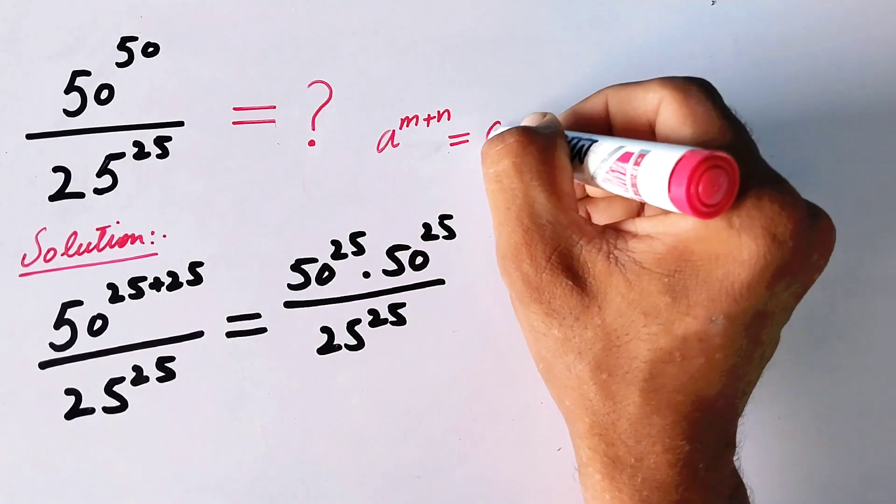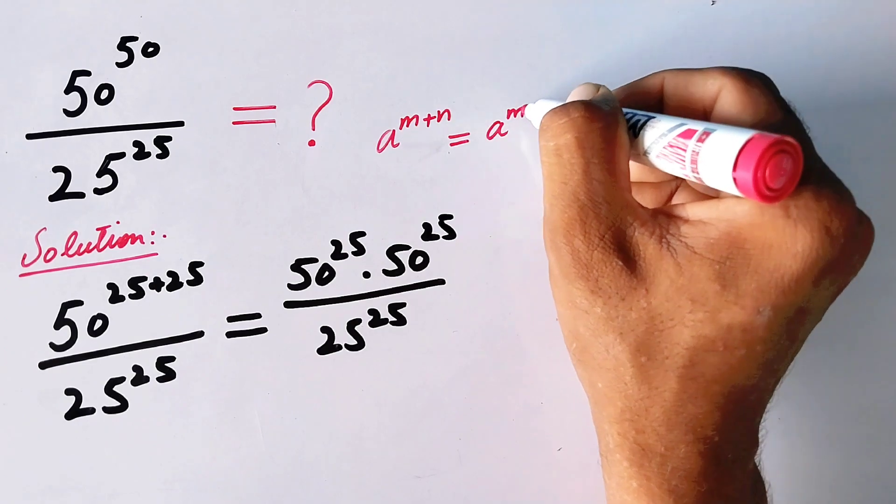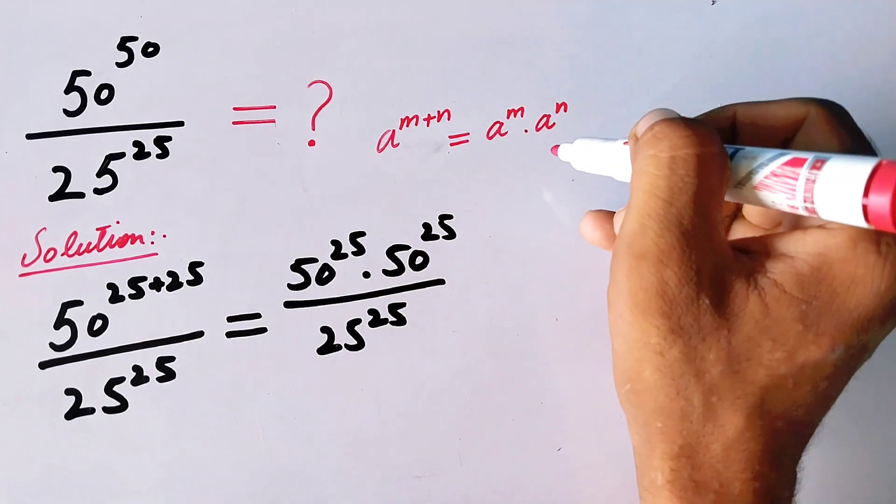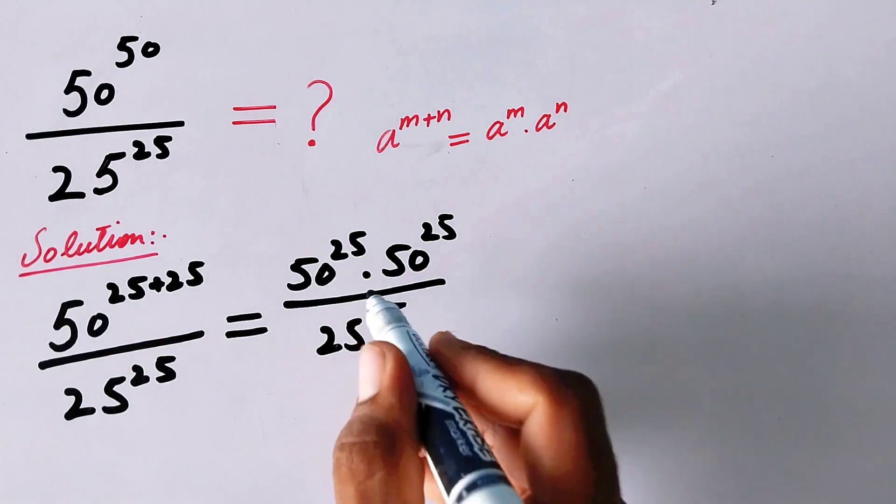So now in the next step, we can write this fraction as 50^25 · 50^25 / 25^25.